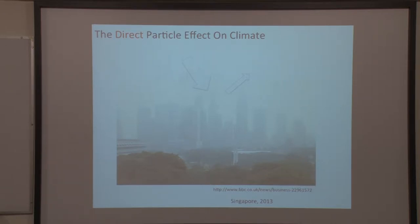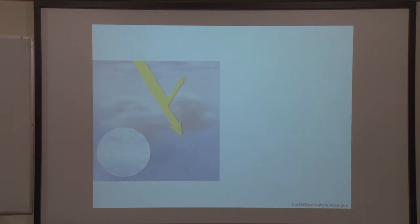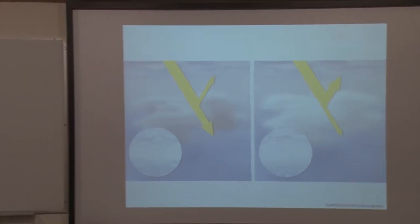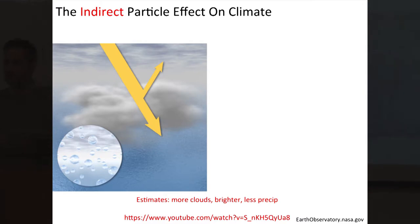If we acknowledge that we as humans are changing particles and cooling the climate — changing the albedo, the reflectivity of our planet — those particles are also important because they act as the seeds on which droplets and ice crystals form. So if we change particles, we affect climate directly, but we also change cloud cover. We call this indirectly affecting climate.